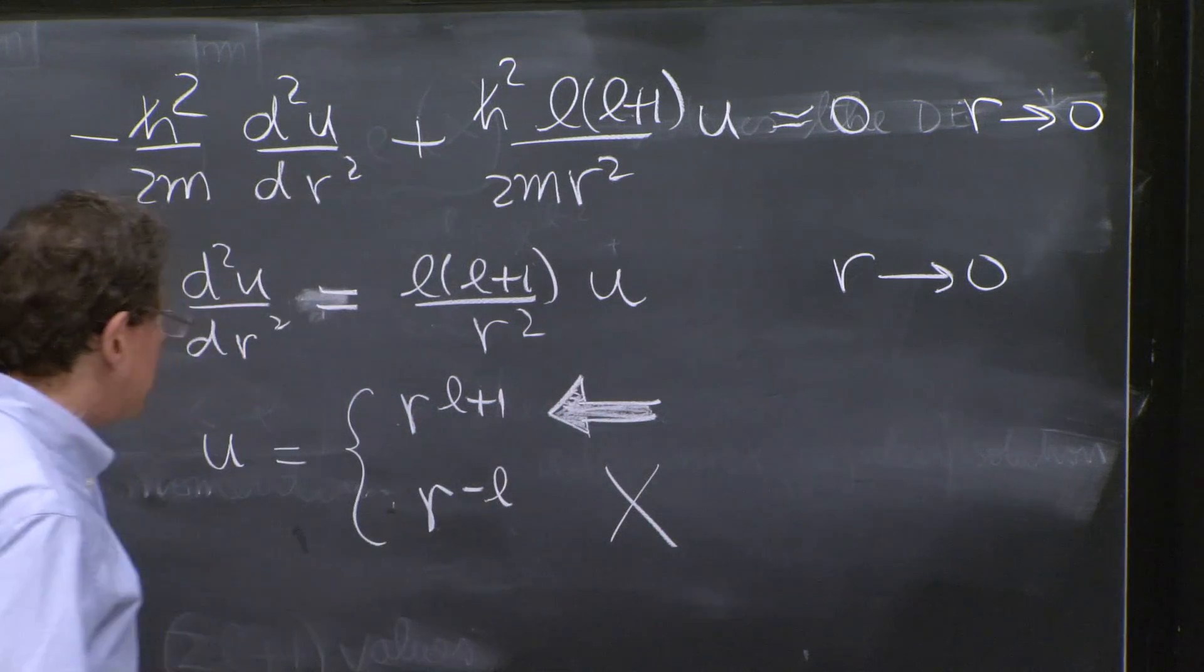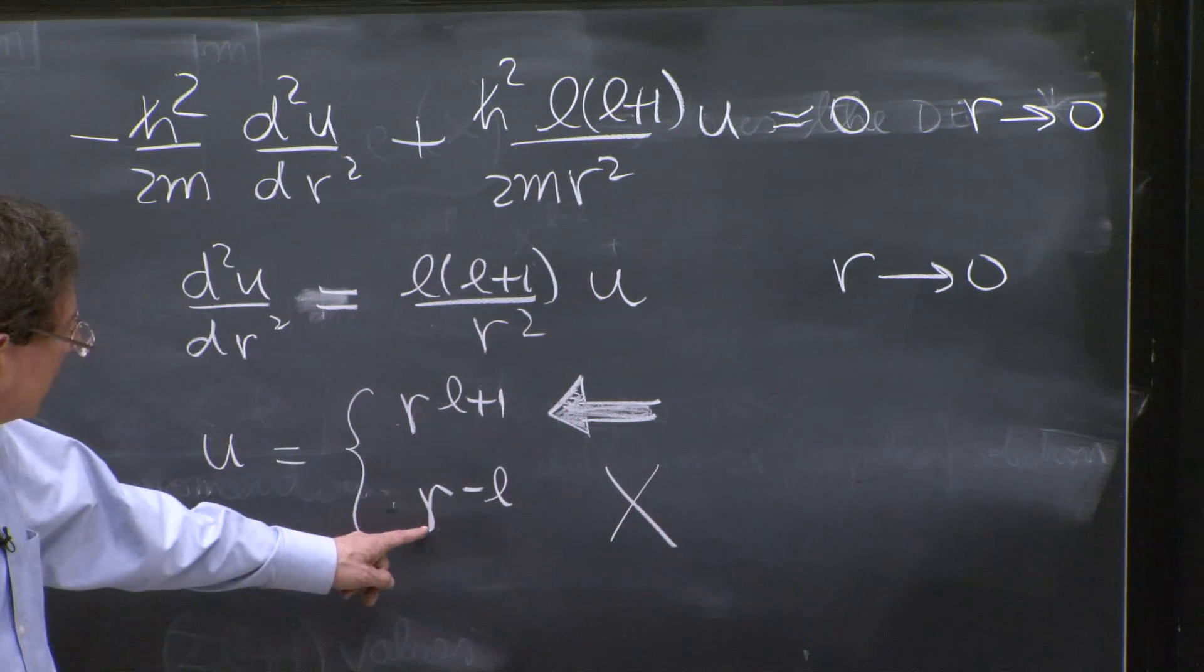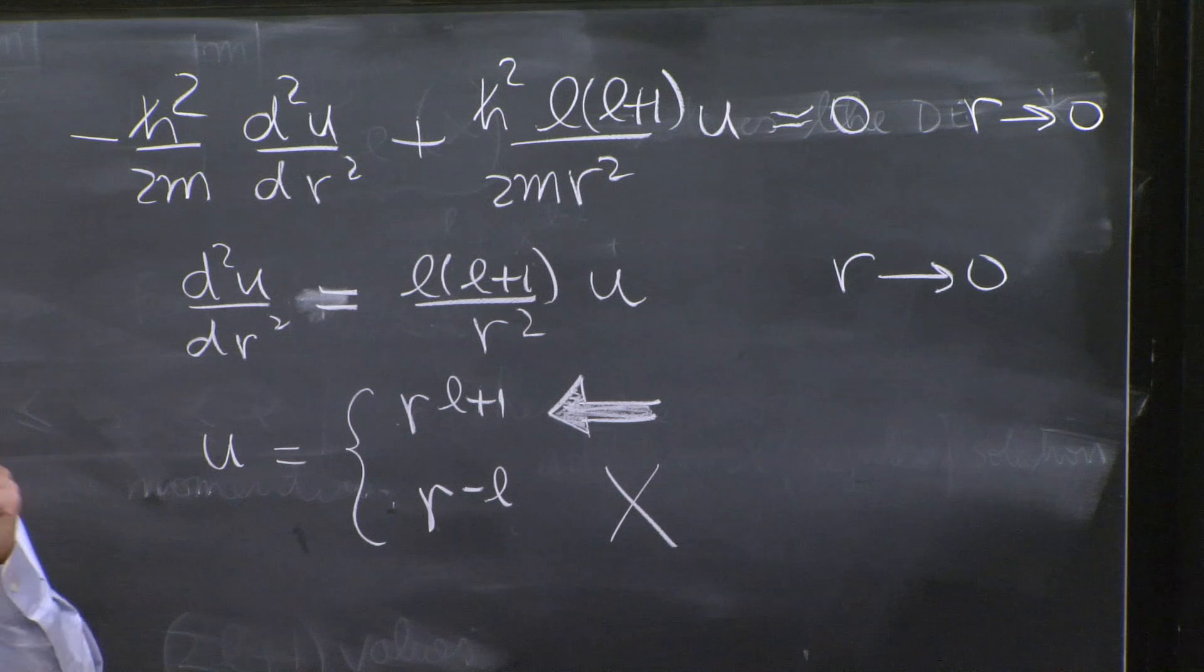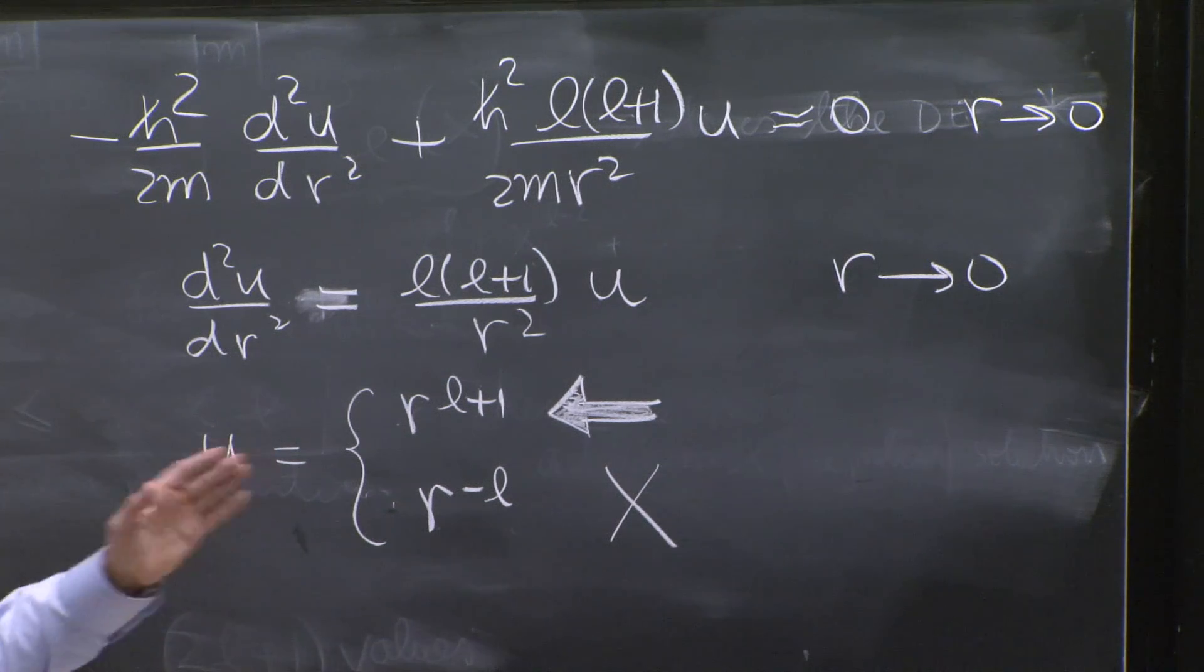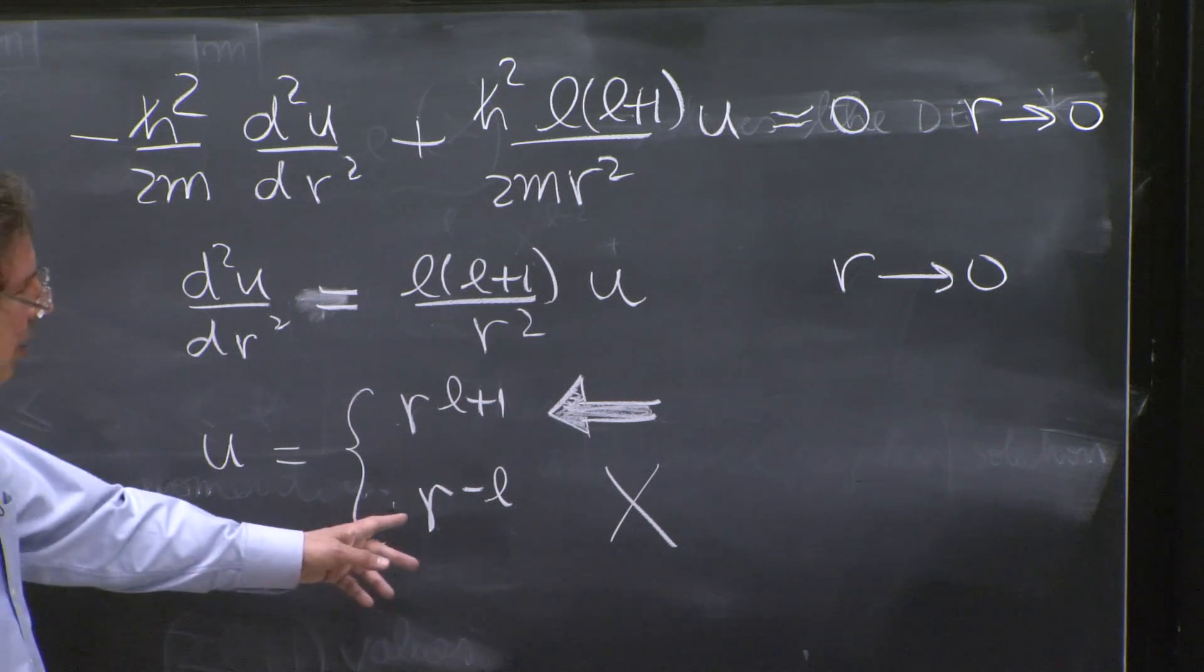The only thing, so it's true that this one is ruled out, and it has problems for normalization. Because it's too divergent. But for l equals 0, it's not divergent.